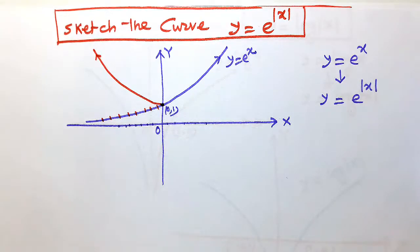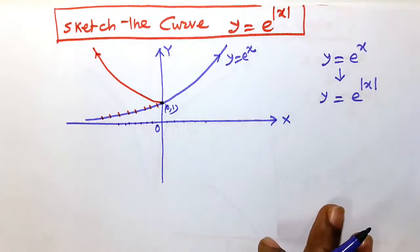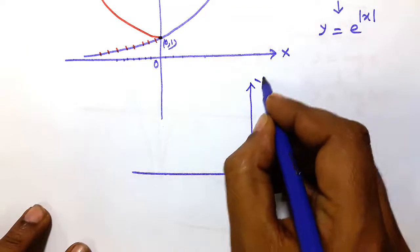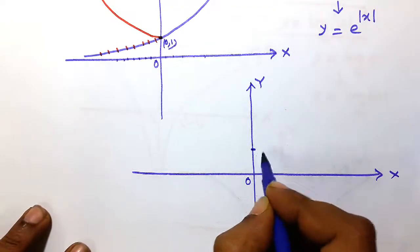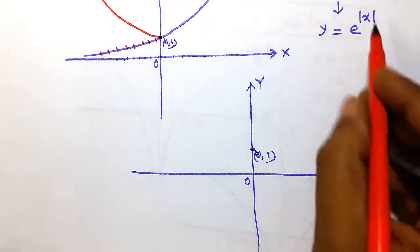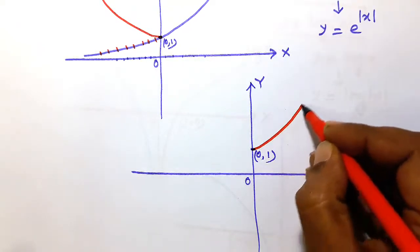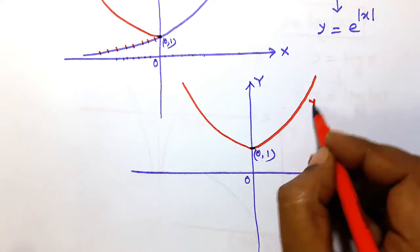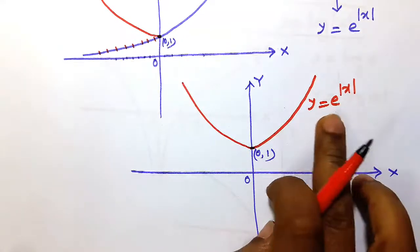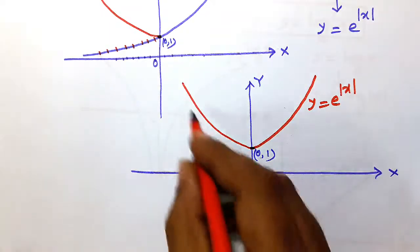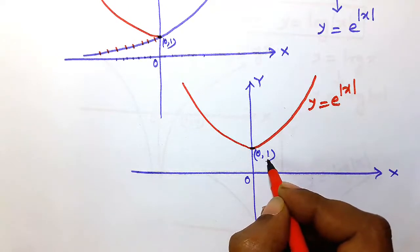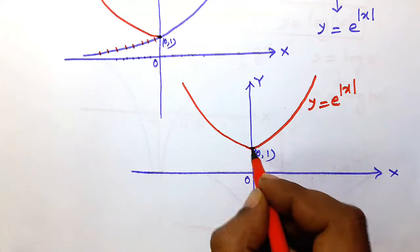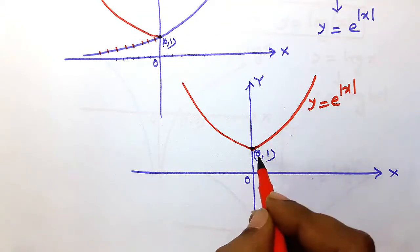So ultimately we get the curve for y = e^|x|. Drawing it finally: y-axis, x-axis, origin O, point (0, 1). The curve passes through (0, 1) and is symmetric. The curve is continuous and everywhere differentiable except at (0, 1), because there is a sharp point there — so the curve is not differentiable at (0, 1).